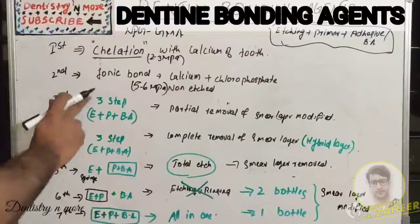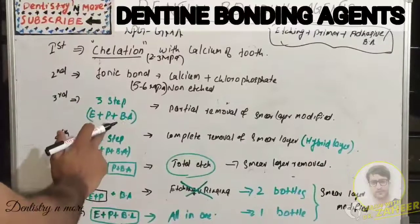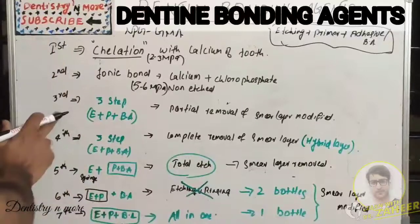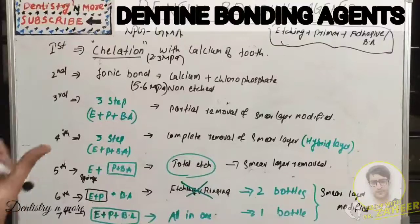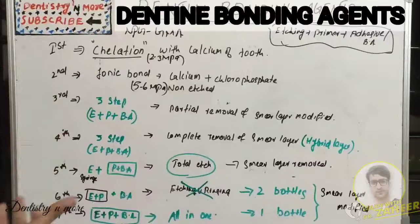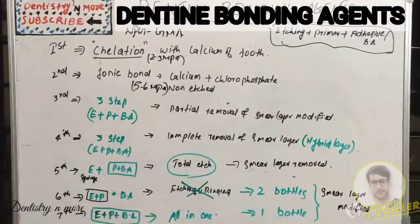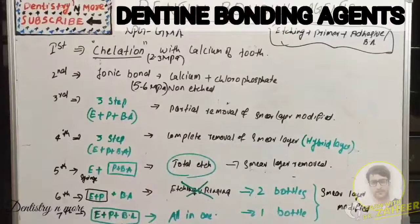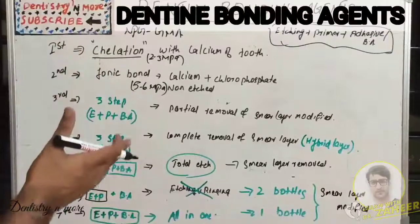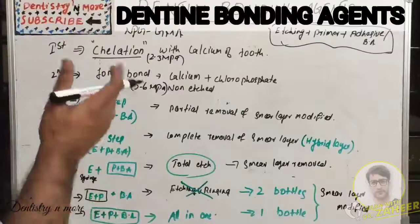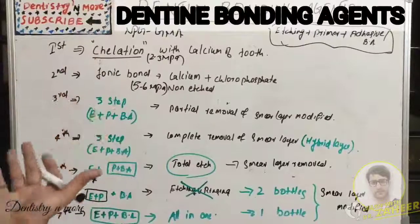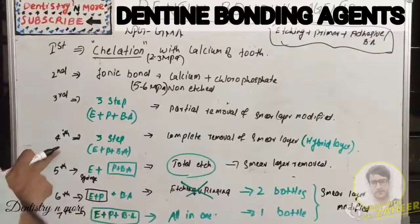The third generation was a three-step method where the etchant came into action alongside primer and bonding agent. This was the first generation to deal with the smear layer and dentinal fluid. They tried to modify the smear layer or remove it without disturbing the smear plugs that occlude dentinal tubules, to avoid aggressive etching causing pulpal irritation. Materials used included 2% nitric acid or 2% malic acid with HEMA, or 10% citric acid with 3% ferric chloride, or 10% phosphoric acid. Examples: Scotch Bond, GLUMA, C&B Metabond.